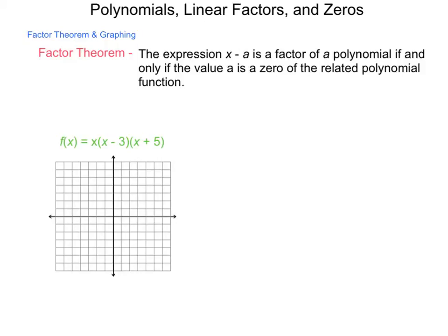Well, what does it take to make this first term zero? And that is zero. What does it take to make the second term zero? And that's a positive three. And what does it take to make the last term zero? And that is a negative five.